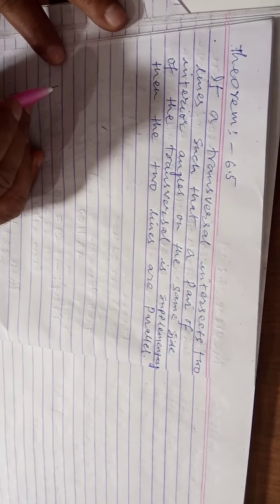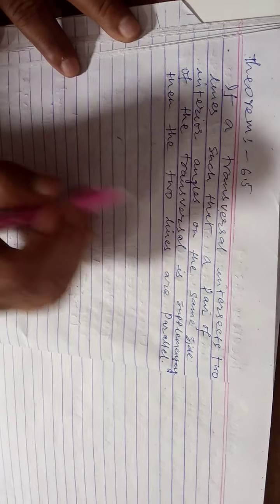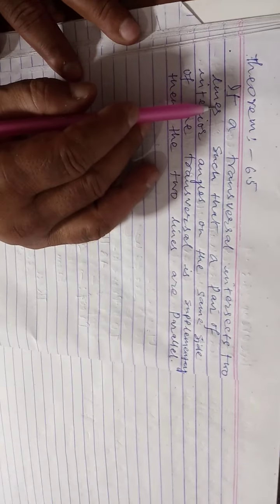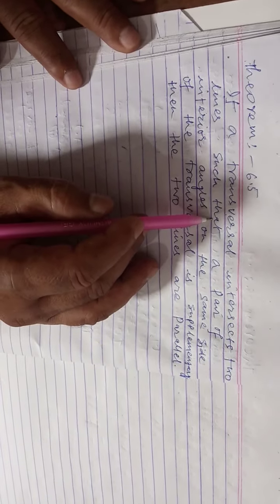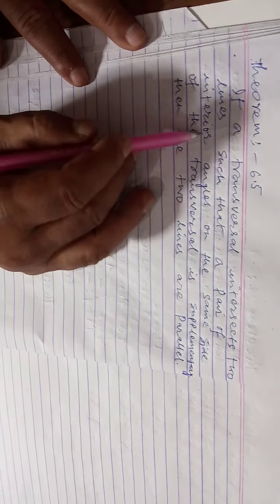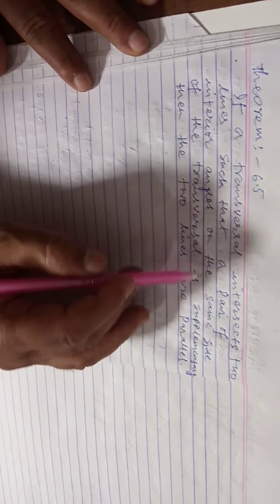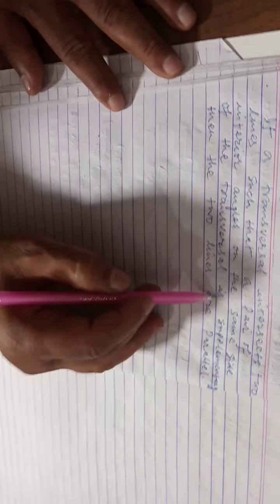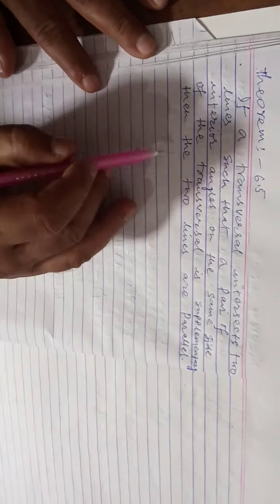Theorem 6.5. If a transversal intersects two lines such that a pair of interior angles on the same side of the transversal is supplementary, then the two lines are parallel.